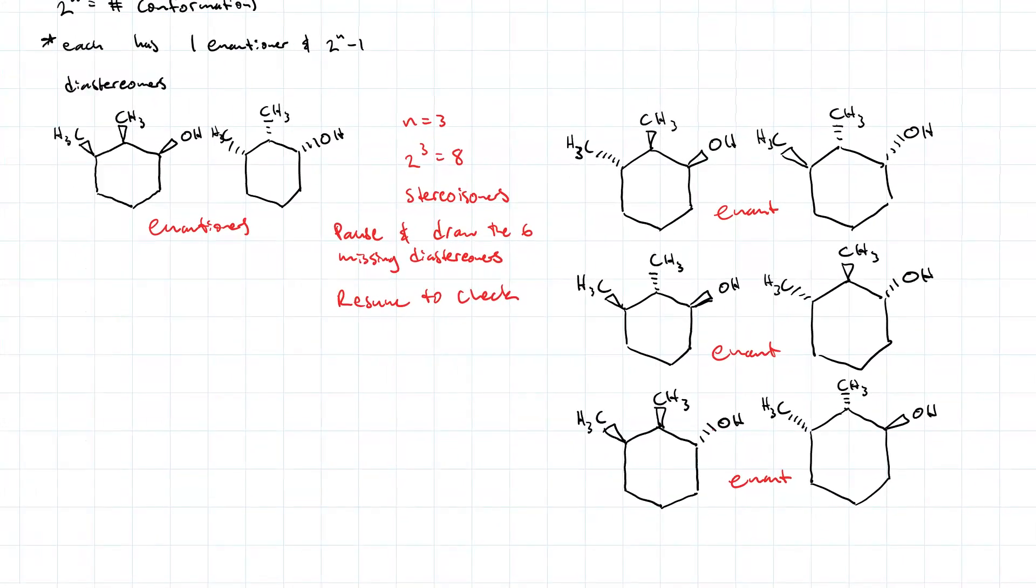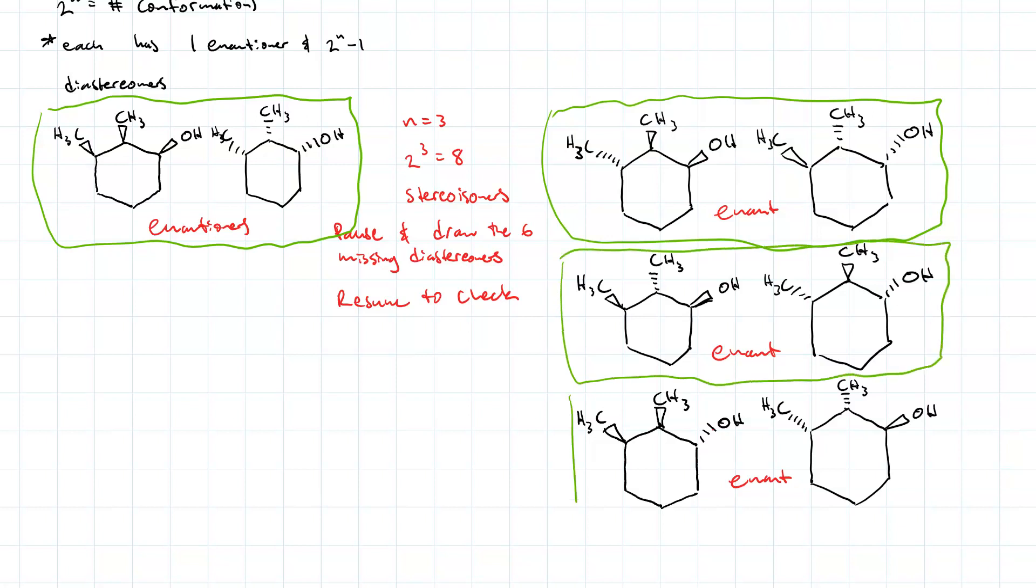Right? And if you draw a box around each one for each pair, the stuff that's within the box is the enantiomer of each other. And stuff that's in different boxes are diastereomers.